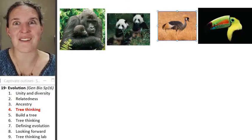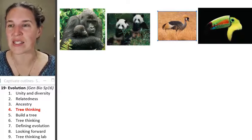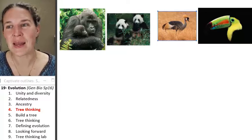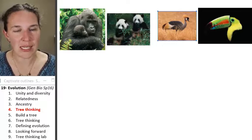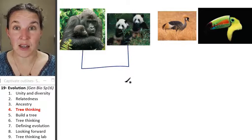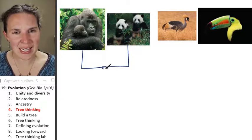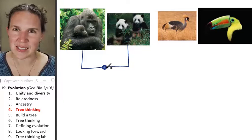But the power of the tree or thinking, the tree thinking process is that now we can come in and we can say, okay, let's build in the lines and actually indicate the fact that these guys share a common ancestor.